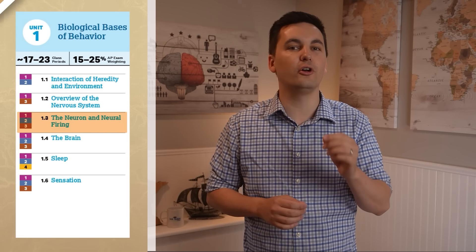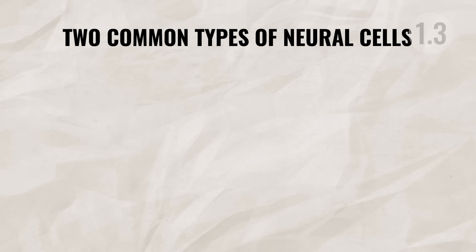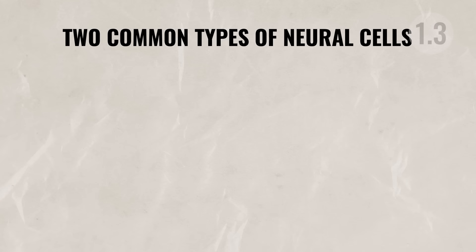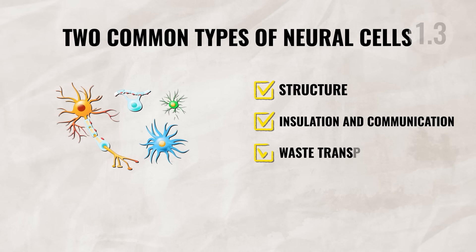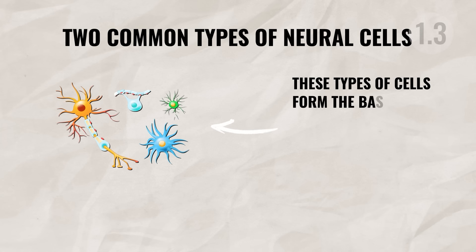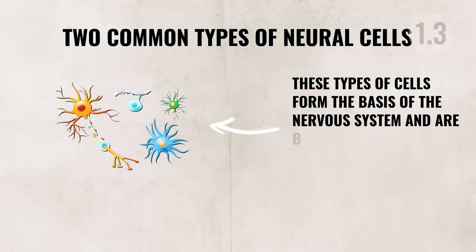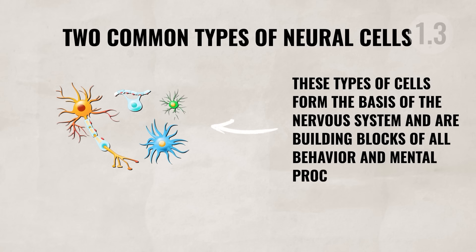Now comes the time to review the different parts of the neuron and neural firing. There are two common types of neural cells. The first is glial cells, which provide structure, insulation, communication, and waste transportation. These cells form the basis of the nervous system and are the most abundant cells in it, supporting neurons through protection and providing nutrients. Importantly, glial cells do not process information — they do not send any messages or signals for your body.